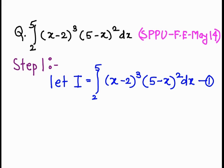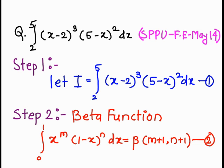In Step 2, we write the formula. The beta function is: integral from 0 to 1 of x raised to m times (1 minus x) raised to n dx equals beta of (m+1, n+1). Consider this as equation 2.